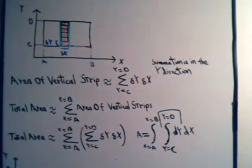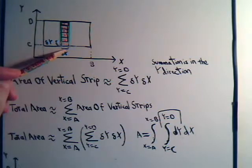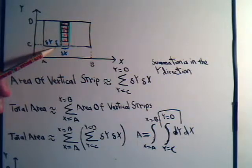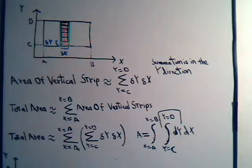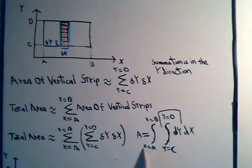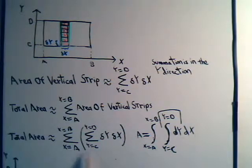Instead of having a finite shaded region, if we use infinitesimally small regions of dimensions dx and dy and add all of those up, that gives us precisely the area of the figure. And rather than a double summation, we now express this with a double integral. Setting up this double integral is entirely analogous to what we accomplished with the double summation.